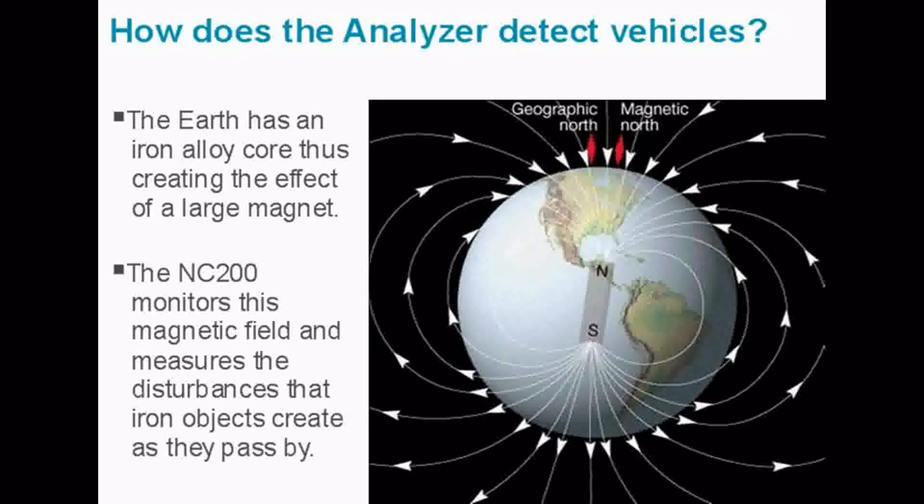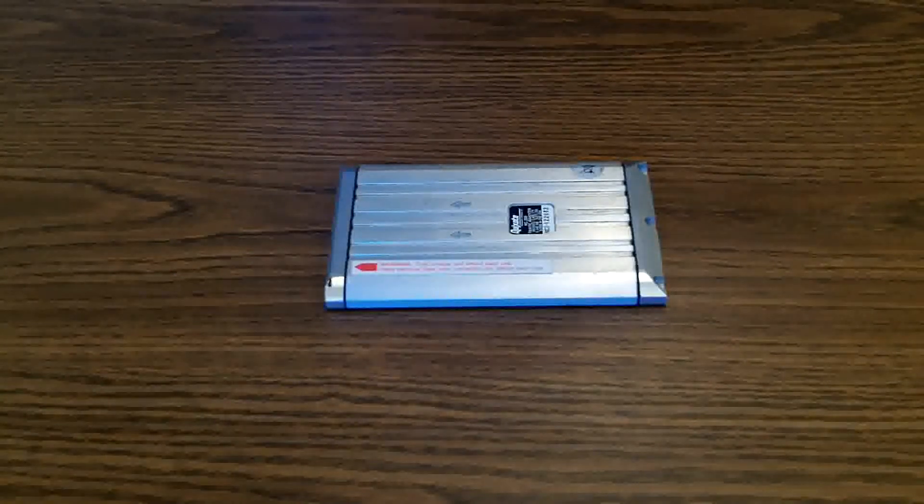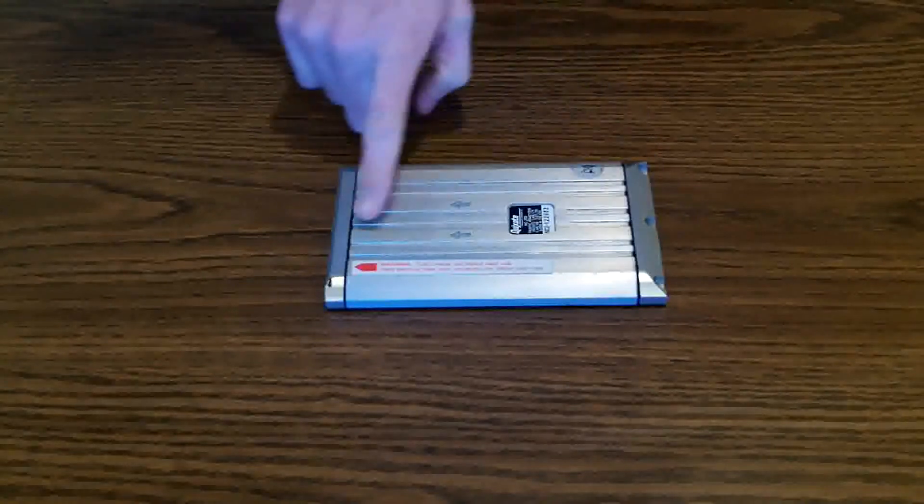This technology is known as vehicle magnetic imaging or VMI. The NC200 not only counts vehicles but it classifies them by length and speed using two sensors, one on each end.